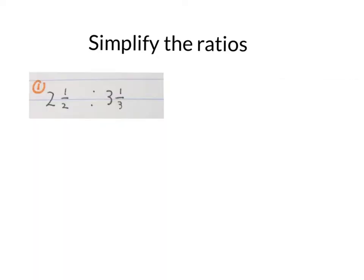The next ratio is 2 and a half to 3 and a third. Convert them both to improper fractions. 2 times 2 is 4 plus 1 is 5 over 2, and 3 times 3 is 9 plus 1 is 10 over 3. So 2 and a half becomes 5 halves and 3 and a third becomes 10 thirds.